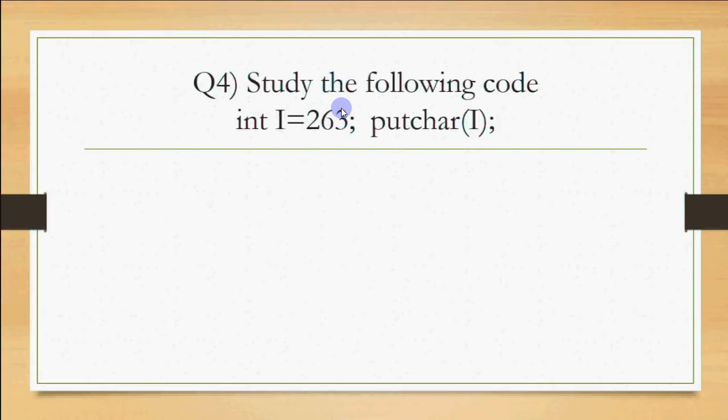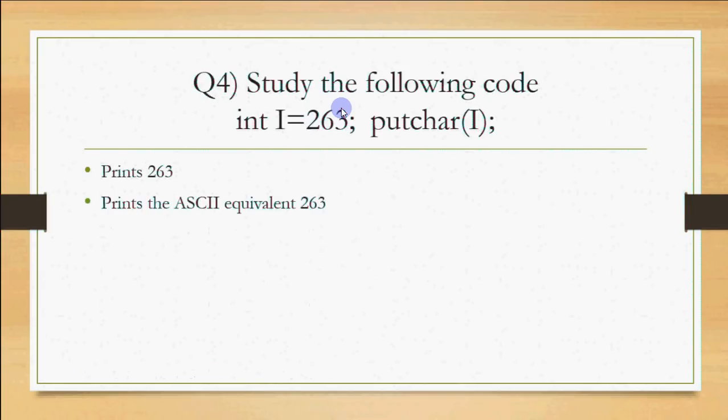Question 4: study the following code. A variable i is set to 263, and then putchar(i) is used to print it. This is similar to the previous question — we are printing the character at ASCII value 263 using putchar. putchar is the function used to print a character.